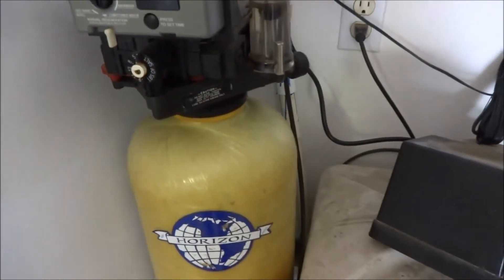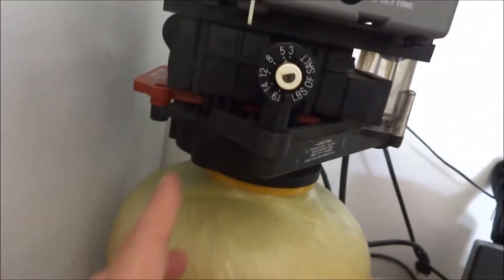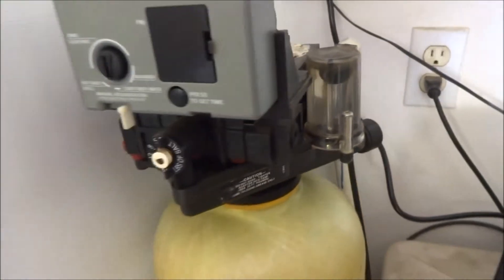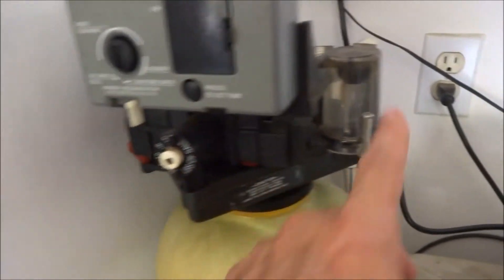The way you can tell the 155 is that this bottom part in here kind of has a triangular look to it. The 255 also has a triangular look, but this right here is off to the side on it.